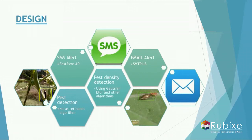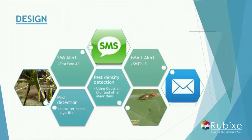For sending SMS alerts, we are using the Fast2SMS API. For sending email alerts, we are using the SMTP library. Another feature of our model is the calculation of pest density, which is the number of pests detected in an image. This feature is very important for the farmer as it helps gauge the impact of the damage already done on the farm.